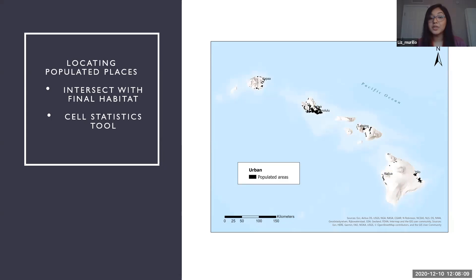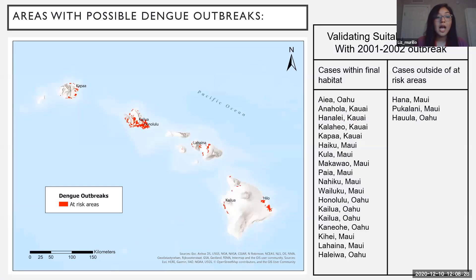And then bringing people into the picture. This is just a quick reference as to the populated places across the islands of where people are located. And what I did is I intersected this data set with my ideal habitat data set to further look at areas where dengue outbreaks would occur in respect to where people are located. As a result, I get this final data set which maps out the at-risk areas for dengue outbreaks in respect to where people are located. On the right-hand side, I have a table of the 22 cities that all reported cases in the 2001 outbreak. And as a quick reference, we can see that of the 22 cities that reported cases, 19 fall within my at-risk areas.